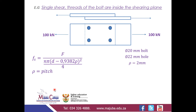Our second example is still single shear, but now the threads of the bolt are inside the shearing plane, meaning the bolt is threaded throughout. This has an implication: the formula is modified slightly. It becomes F over n times pi times (d minus 0.9382 × pitch)² over 4, where pitch is the distance between the threads.